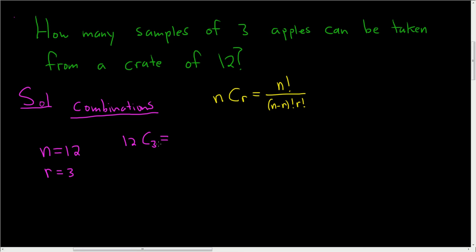So in our case, n is 12, so 12 factorial divided by 12 minus 3 factorial 3 factorial. So this is equal to 12 factorial over 9 factorial 3 factorial.